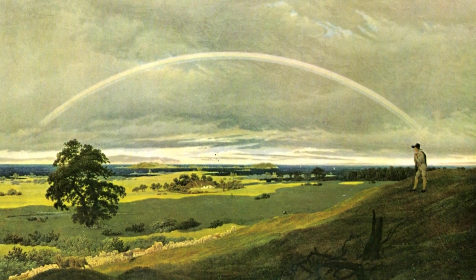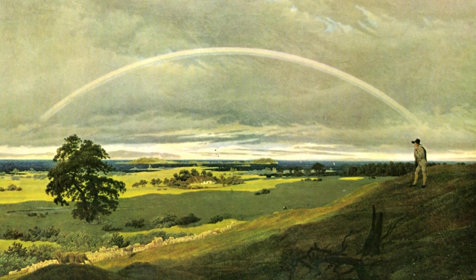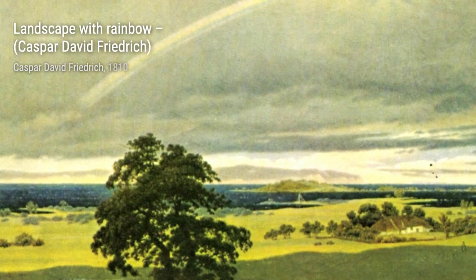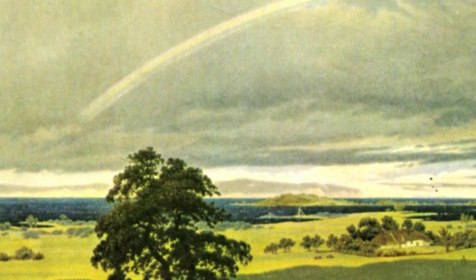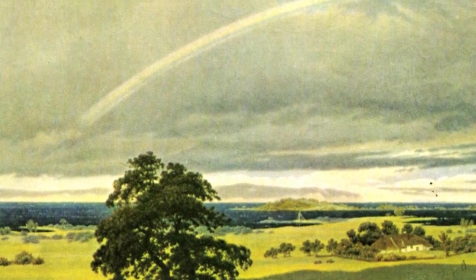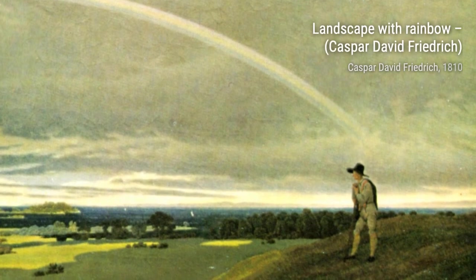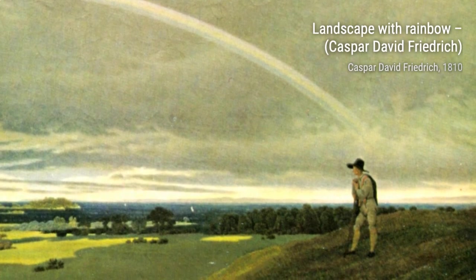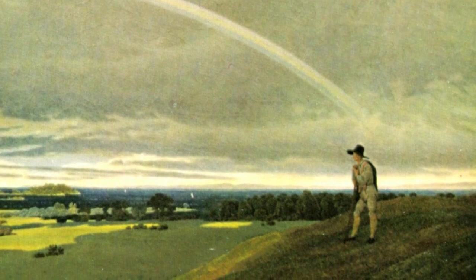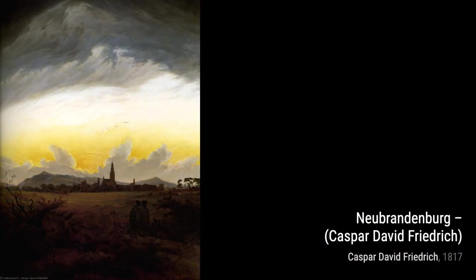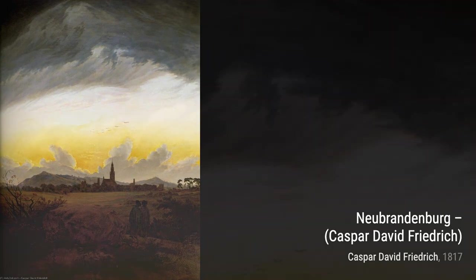In Landscape with Rainbow, Friedrich captures the beauty of a rainbow stretching across a serene landscape. The vibrant colors and the juxtaposition of light and shadow create a sense of hope and optimism. Neubrandenburg portrays a picturesque town surrounded by nature. Friedrich's attention to detail and use of light and shadow bring the scene to life, inviting viewers to immerse themselves in the beauty of the countryside.